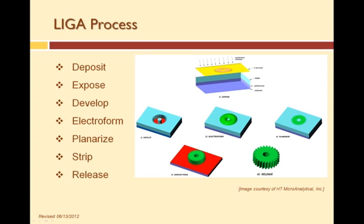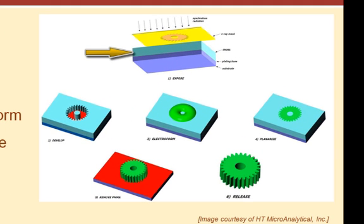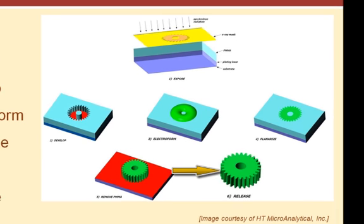The first step is to apply a thick x-ray sensitive material, such as PMMA, also known as plexiglass, to a conductive substrate. The next step is expose, followed by develop. After develop, an electroplating or electroforming process fills the cavities formed during develop. Electroforming is followed by CMP, or chemical mechanical polishing, then a PMMA strip and component release.